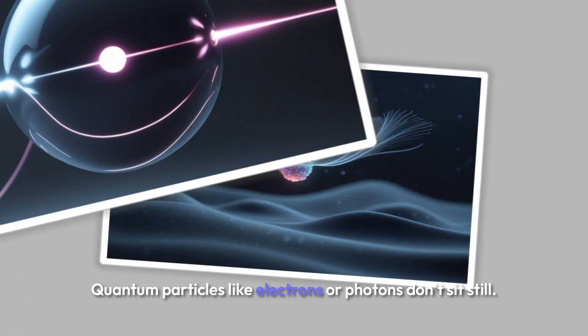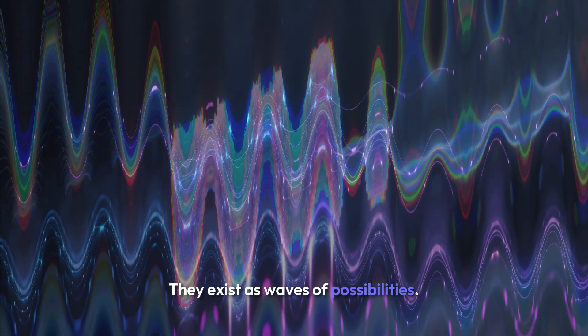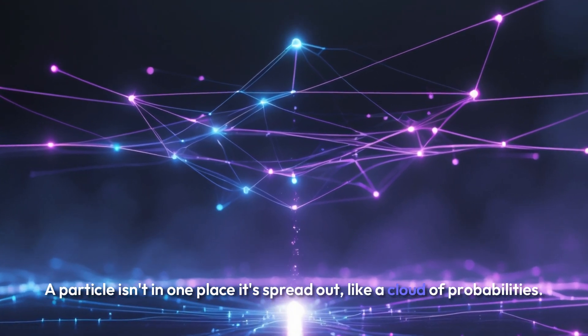Quantum particles like electrons or photons don't sit still. They exist as waves of possibilities. A particle isn't in one place. It's spread out, like a cloud of probabilities.